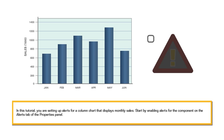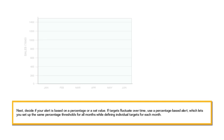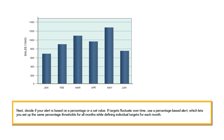Start by enabling alerts for the component on the Alerts tab of the Properties panel. Next, decide if your alert is based on a percentage or a set value.